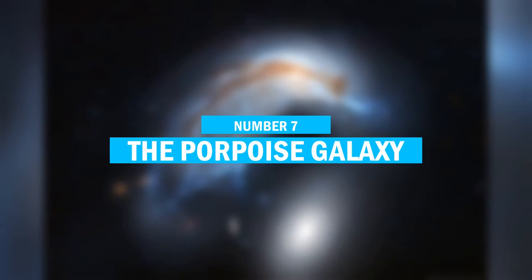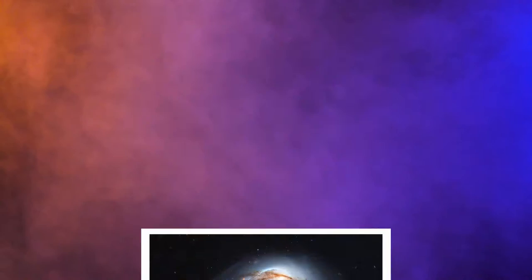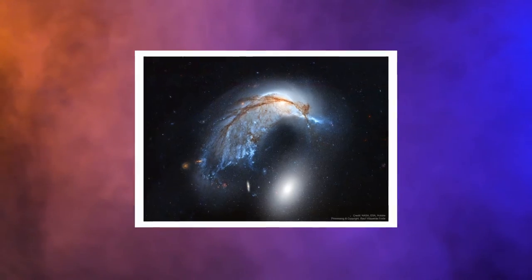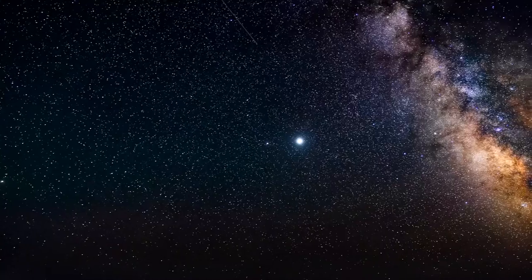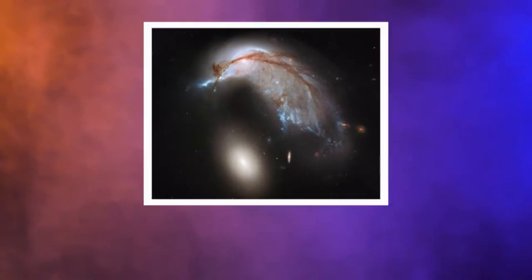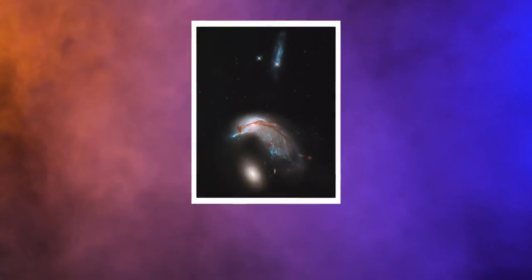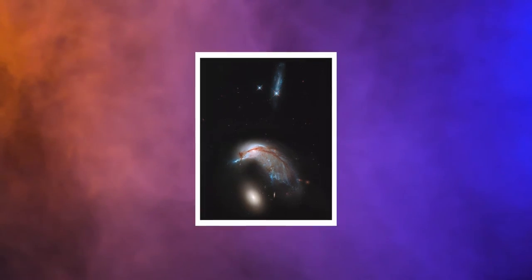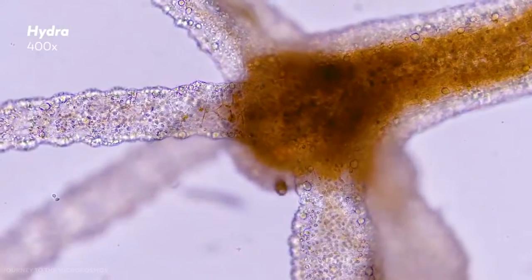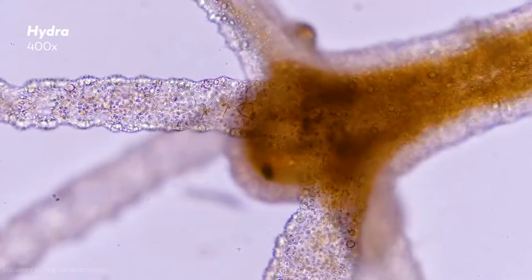Number 7. The Porpoise Galaxy. The galaxy is known as the Penguin Galaxy or the Porpoise Galaxy. Because it involves a pair of interacting galaxies, the Penguin Galaxy is classified as a peculiar galaxy. The Penguin Galaxy, also known as the Porpoise Galaxy, is found in the constellation of Hydra, the sea monster. It has a magnitude of 12.85 and is located 352 million light-years from the sun.